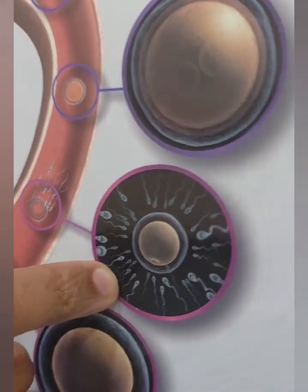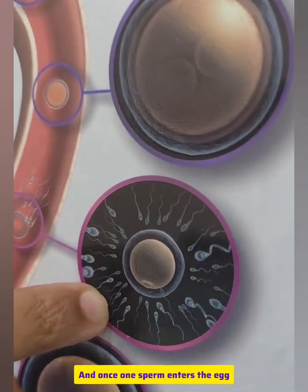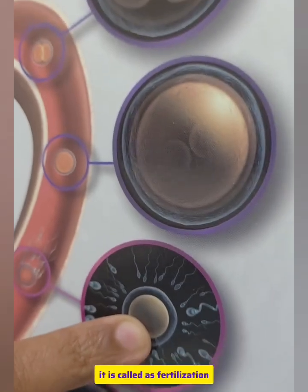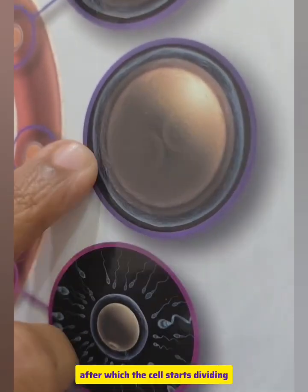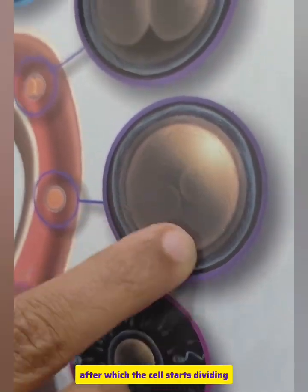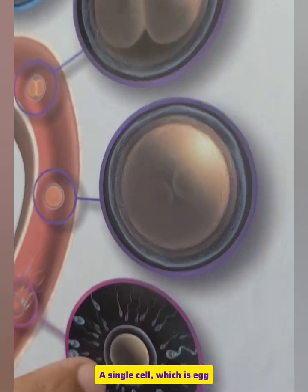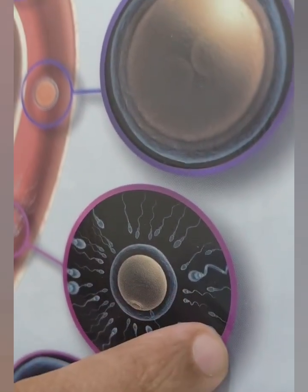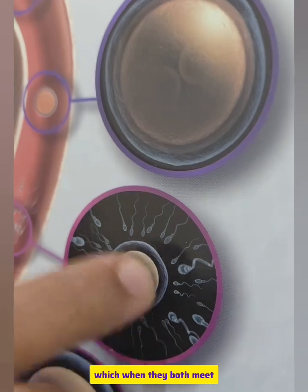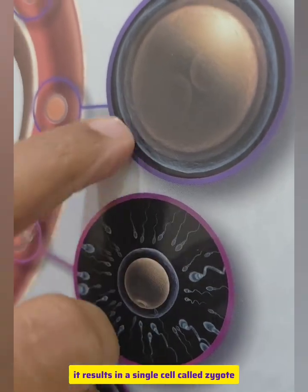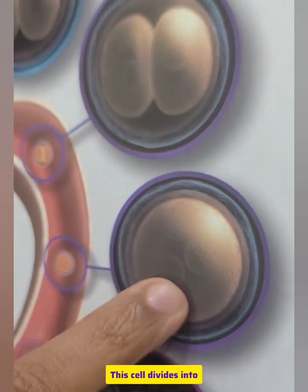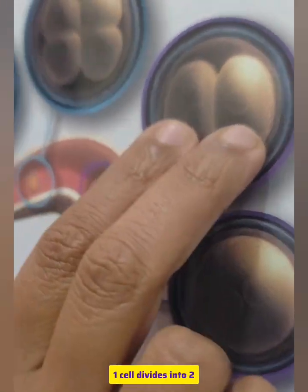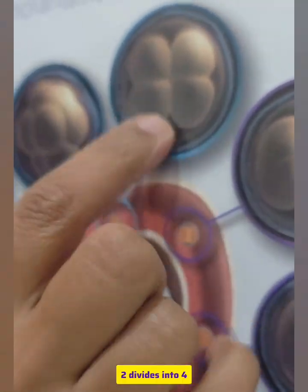This is how the egg and sperm will interact. Once one sperm enters the egg, it is called fertilization, after which the cell starts dividing. A single egg cell and a single sperm, when they both meet, result in a single cell called a zygote.